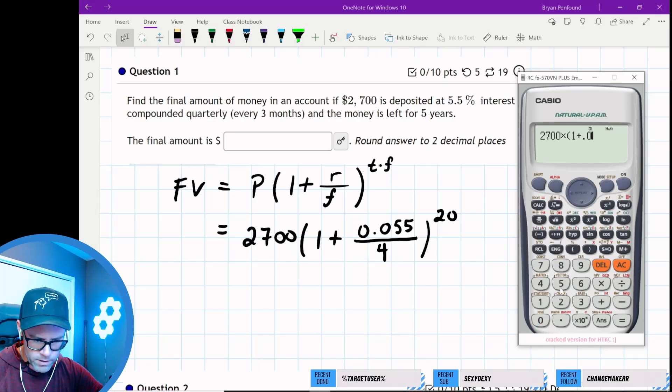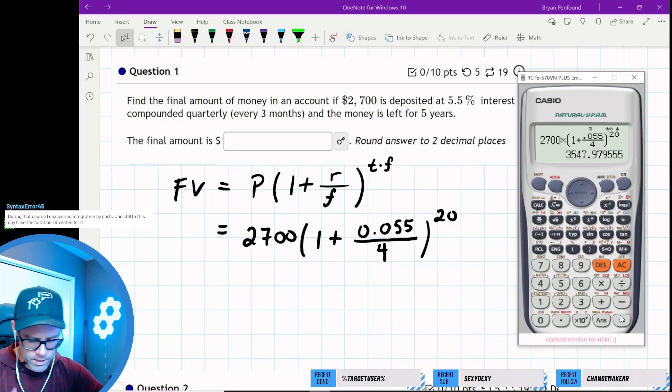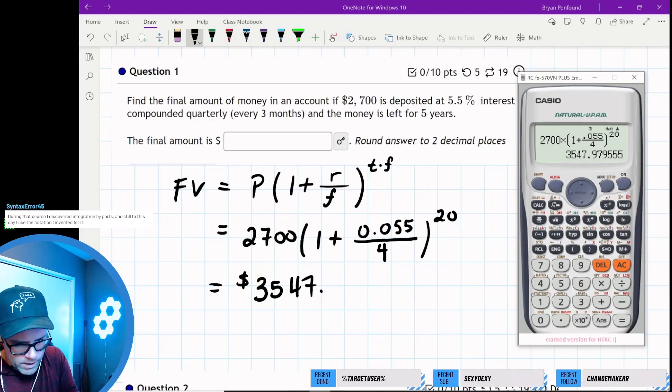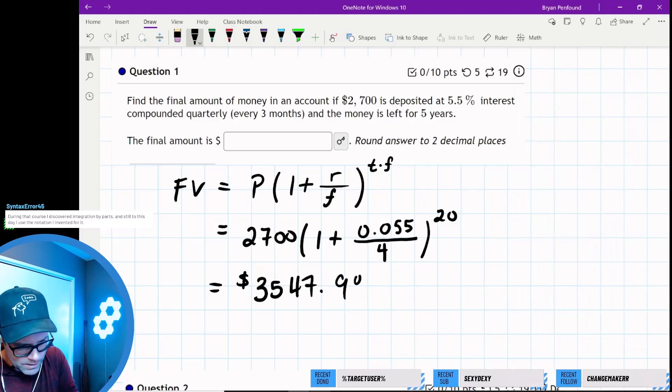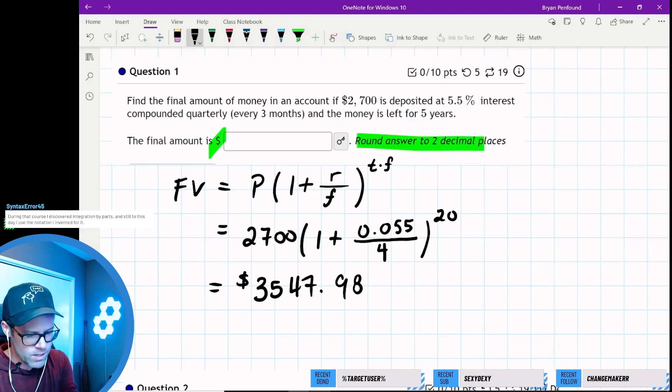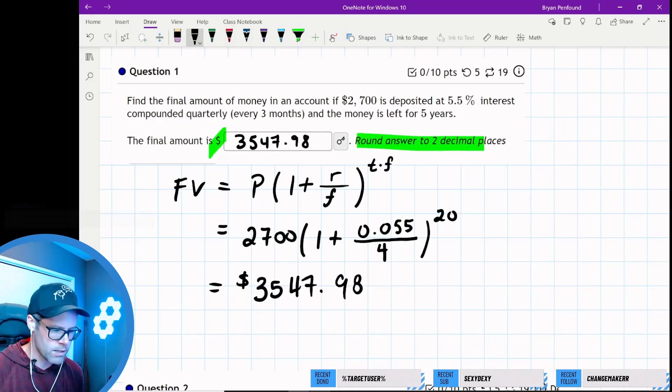One plus 0.055 divided by 4, to the power of 20. We're going to have about $3,547.98. Be careful here—it says round to two decimal places. The dollar sign is here, so I would enter 3547.98 and not add any more or any less.